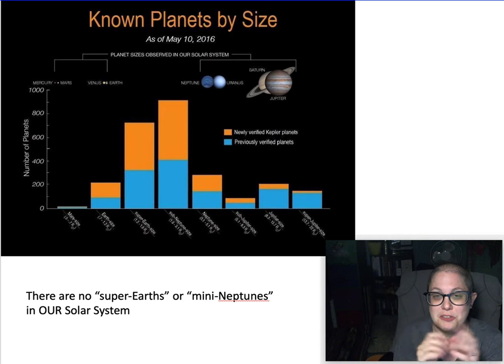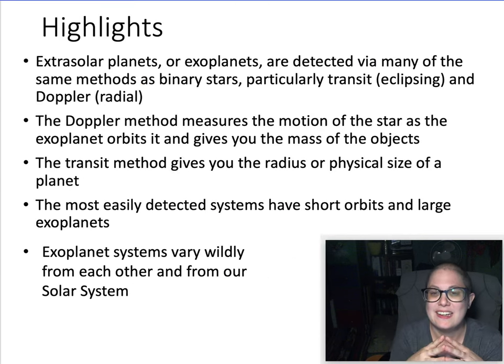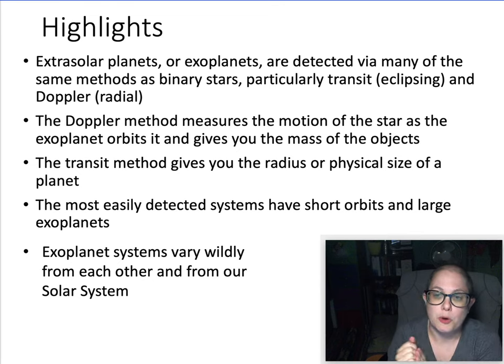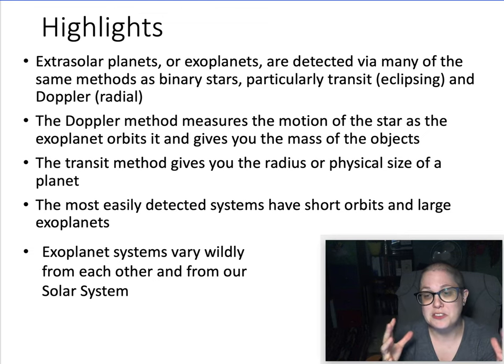Okay, highlights from this. Extrasolar planets or exoplanets detected with same, some of the same methods that binary stars were detected with. Instead of eclipsing, you have transiting, same thing. Doppler, radial method, for detecting exoplanets. The Doppler method measures the motion of the star with red shift and blue shift as the exoplanet orbits, tells you the mass, gives you an idea of the mass. The transit method is the planet going in front of the star, gives you an idea of its physical size or radius.